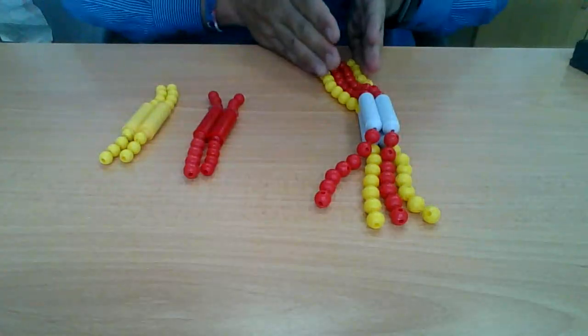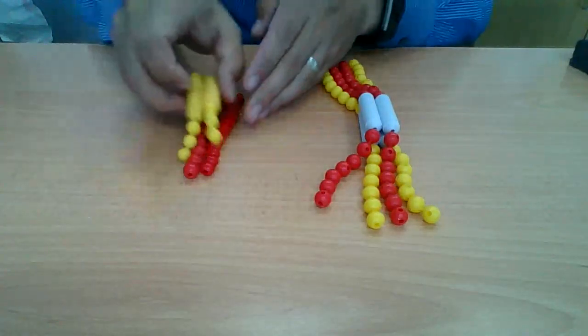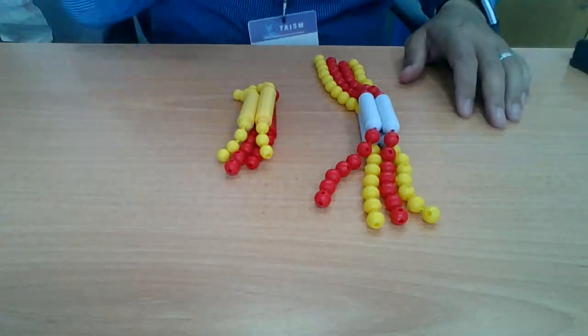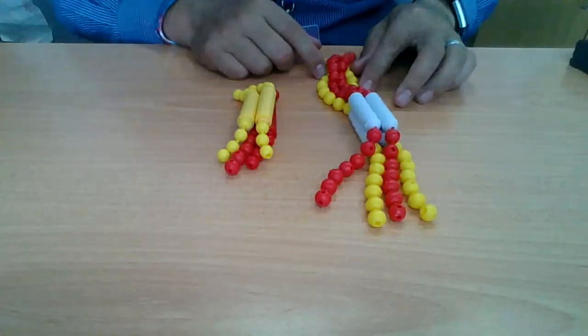So homologous pair 1 just paired up. Here goes homologous pair number 2, and they just paired up. So they're literally on top of each other, forming a tetrad.